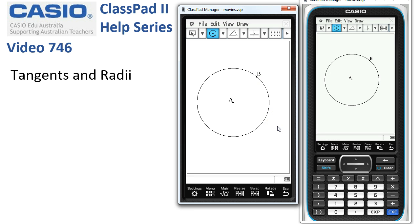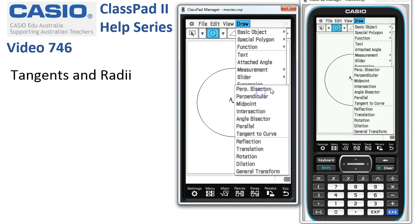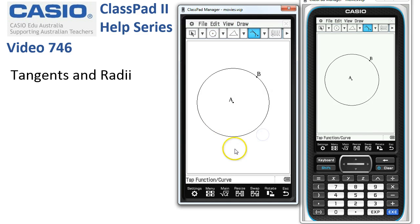Next we want to create a tangent. Somewhere down over here will do. We'll go to draw, construct, tangent to curve, and tap once on the curve here and we get a tangent drawn in.